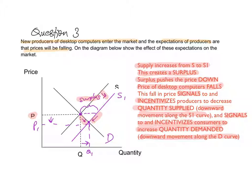So once again: initially you start with a shift that creates a shortage or a surplus. This shortage or surplus will then cause a change in price — either price will rise or fall. This rise or fall in price will then cause movements along both the demand and the supply curve to bring the market back to equilibrium. Once you have shifted the curve and price begins to change, what's actually changing is the quantity demanded and the quantity supplied — not demand and supply. So here you just say supply has increased initially from S to S1, which has created a surplus, which has pushed the price down. This fall in price will gradually increase quantity demanded and gradually decrease quantity supplied until the market comes back to equilibrium and the surplus is cleared.